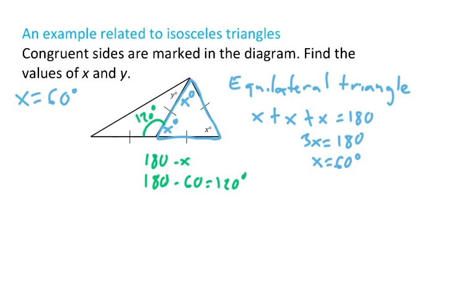And then in the triangle that I'm outlining in green, notice that two of those sides are congruent. Therefore, that is an isosceles triangle. And therefore, the base angles of the isosceles triangle, the angles adjacent to those congruent sides, must also be congruent. So this is Y degrees as well.